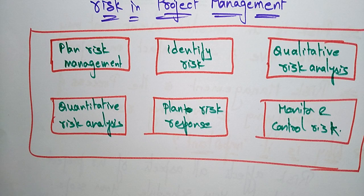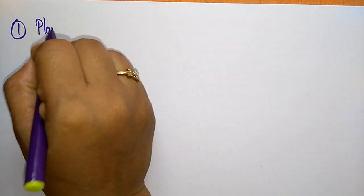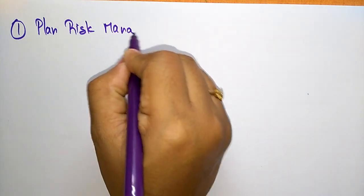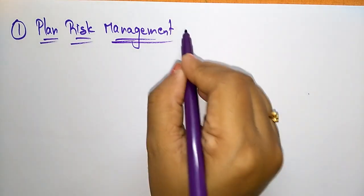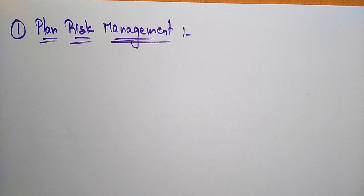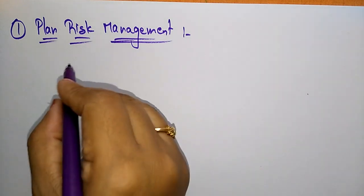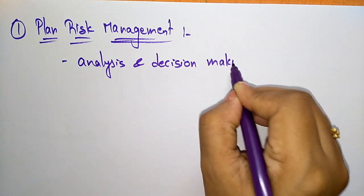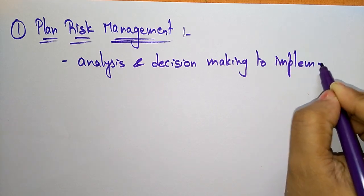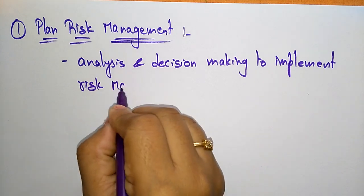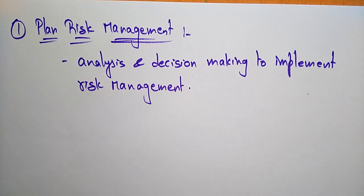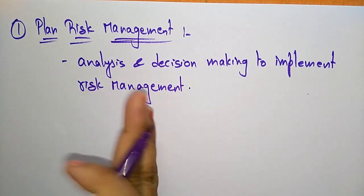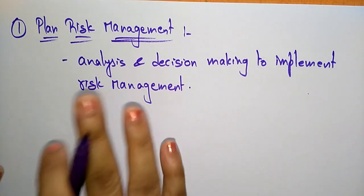The first one is Plan Risk Management. Plan risk management is the analysis and decision-making to implement risk management. If you want to plan the risk management — what are the risks involved in the project — first you have to analyze the project and make some decisions to implement the risk management.